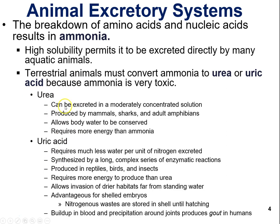Urea can be excreted in a moderately concentrated solution. It's produced by mammals, sharks, and adult amphibians, and it allows a certain amount of body water to be conserved. However, some water is still needed to secrete out that urea. To excrete metabolic waste via urea requires more energy than just getting rid of ammonia because a chemical reaction is needed to convert ammonia to urea.